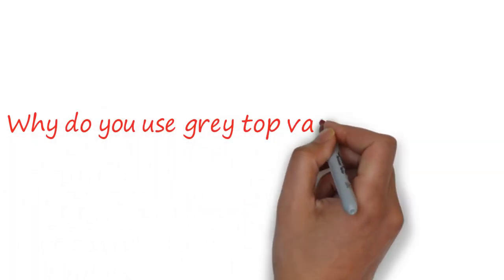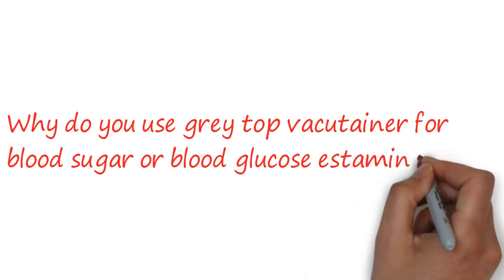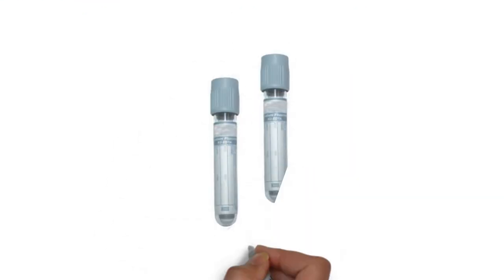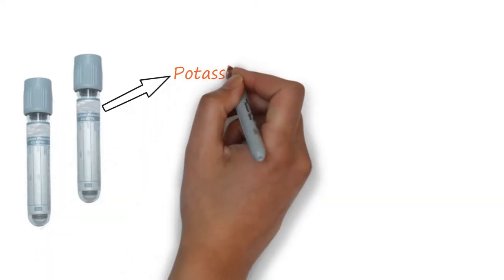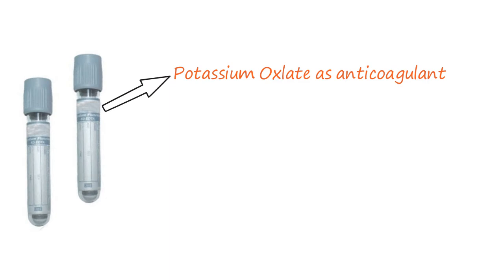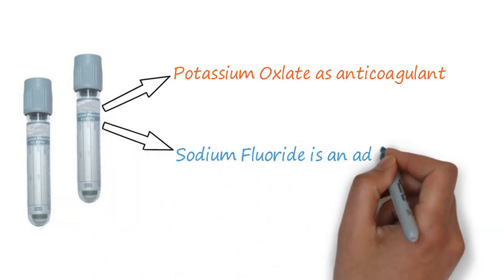Why do you use gray top vacutainer for blood glucose estimation? Gray or fluoride vacutainers contain potassium oxalate as an anticoagulant, which prevents blood clotting, and sodium fluoride, which is an additive.